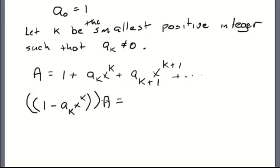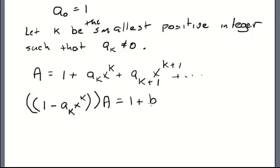That's equal to: we've got a one here. Then one times a_k plus one times negative a_k is going to give us zero, so that term is going to go away. And then we're going to be left with the coefficient of x to the k+1, but I don't care — I'm just going to call it b. It might be zero.